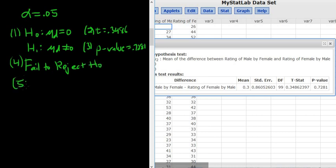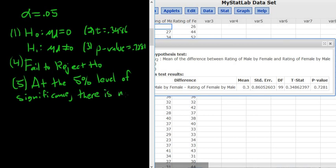And then step five is our interpretation. So in this case, we start by mentioning the level of significance. So at the 5% level of significance, and it's bigger than alpha, so we fail to reject. So whenever you reject there is, fail to reject there is not. There is not sufficient evidence.